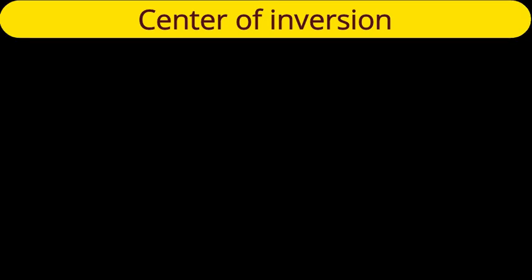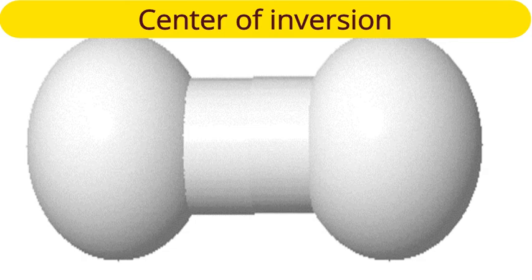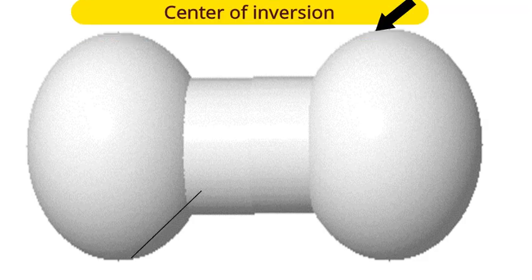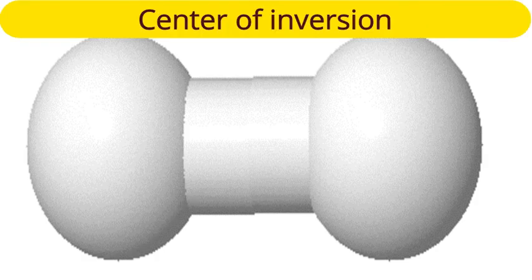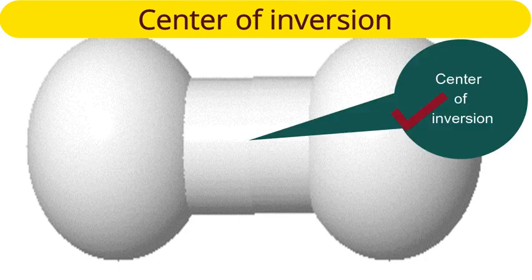Next is the linear hydrogen molecule H₂. If I take a lower point from the left hydrogen atom, draw a line up to the center of the molecule, and extend it to the same extent, I will meet an upper point from the right-side hydrogen — a similar point. If I consider the center of the left-side hydrogen, I get the center of the right-side hydrogen after inversion. Therefore, there is a center of inversion in H₂.